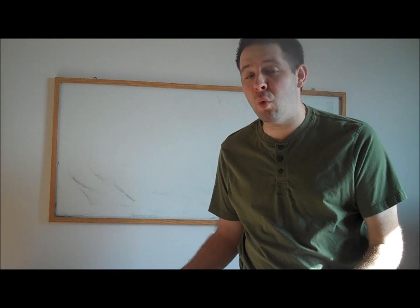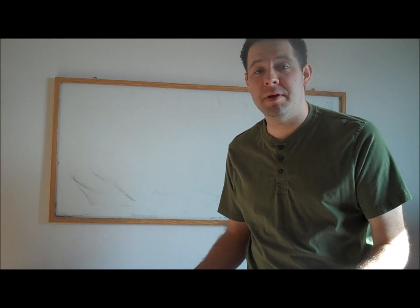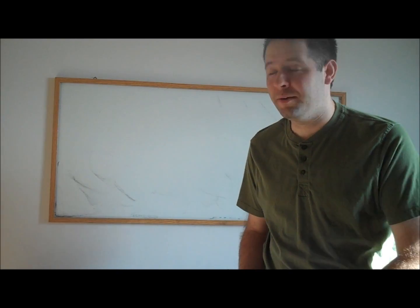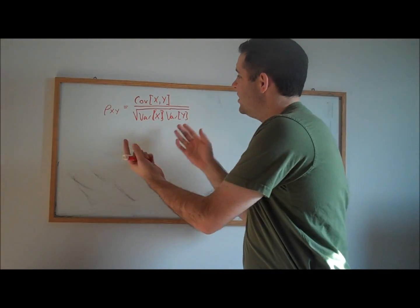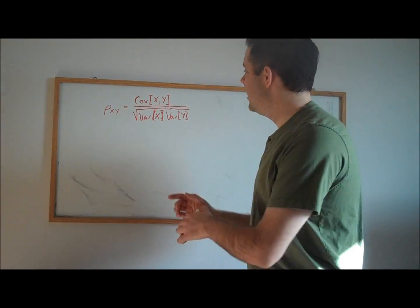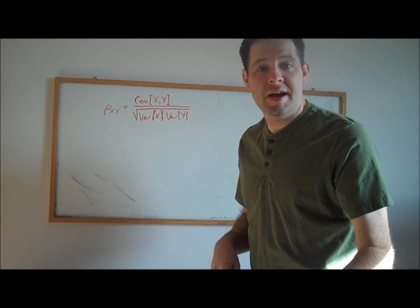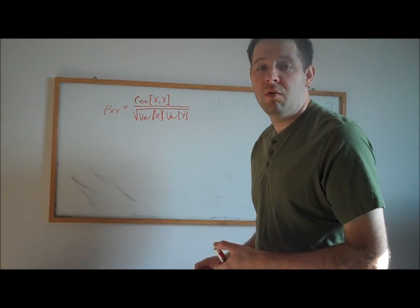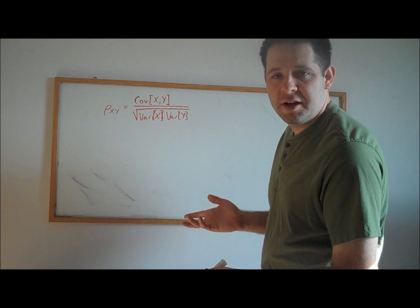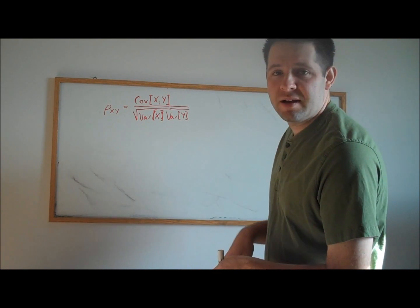In this video, I introduce the idea of correlation, and I offer a rigorous proof for why the correlation has to be between negative 1 and 1. For starters, the correlation is defined as the covariance divided by the standard deviation of x and the standard deviation of y. And we want to show that the correlation is between negative 1 and 1.